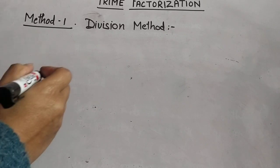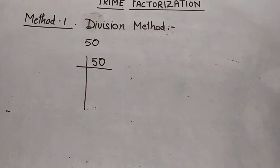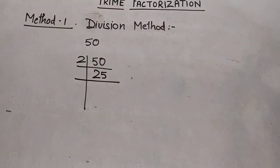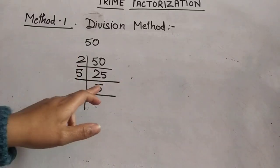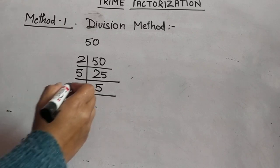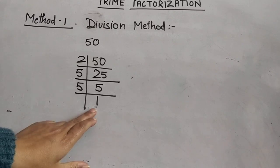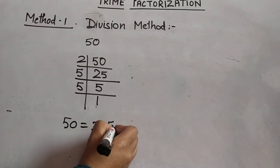One more example: prime factorization of 50. Since 50 is an even number, we can divide it by 2. 50 divided by 2 is 25. Now 25 is an odd number, so we cannot divide it by 2. The next smallest prime number is 3, but 25 is not divisible by 3, so we go to 5. 5 × 5 = 25. Since 5 is itself a prime number, we divide it by 5 and get 1. The prime factors of 50 are 2 × 5 × 5.